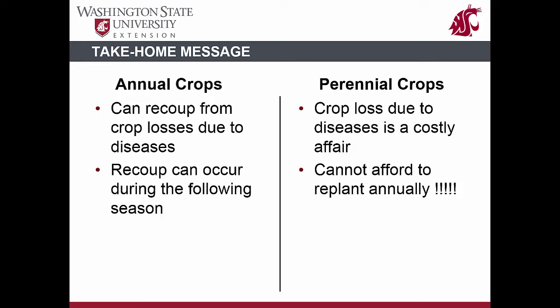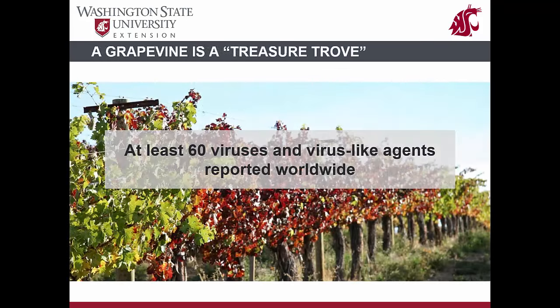This is not possible with perennial crops that need four to five years for full production. By the time we realize that a young planting is not yielding a full crop due to virus infection, four to five years have been lost. Replacing the vineyard with certified pathogen-free grapevines adds another four to five years until full production — losing a total of about 10 years with no economic returns, and absorbing the cost of vineyard establishment twice. Establishing a vineyard is a long-term investment requiring sound planning, including buying certified grapevines.